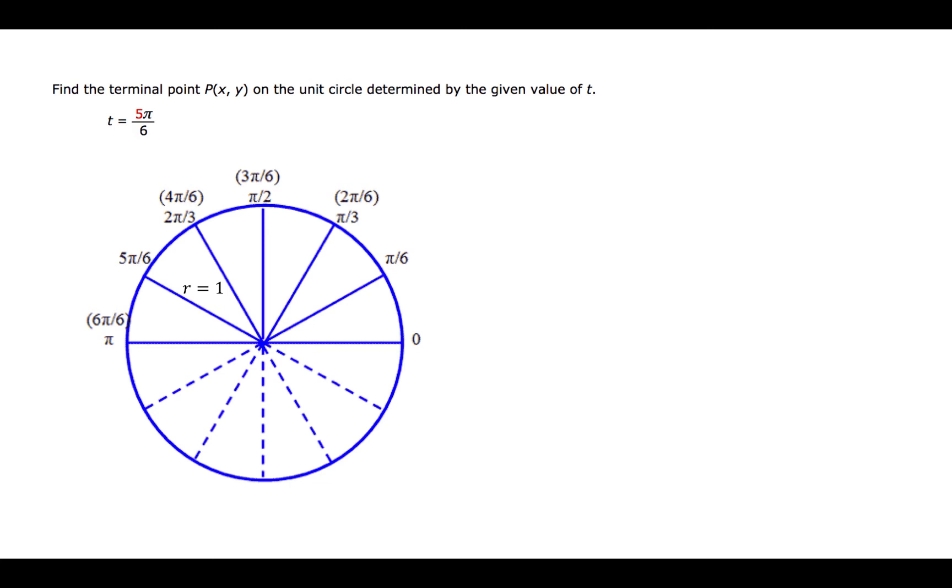Since this is a unit circle, the radius will be 1. We are to find the coordinates for this point (x, y). This point is where the radius meets 5π over 6 radians on this unit circle.